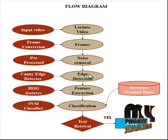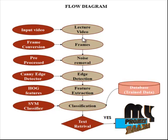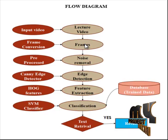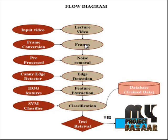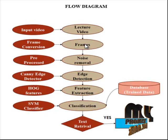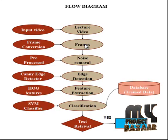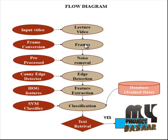Now let's discuss the flow diagram for this process. First, the lecture video is captured from the database. Next, in the frame conversion step, the videos are converted into frames. A film frame or video frame is one of the many still images which compose the complete moving picture. The video is read, converted to frames, and the converted frames are saved.